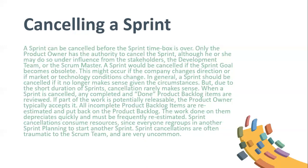Cancelling a sprint: a sprint can be cancelled before the sprint time box is over. Only the product owner has the authority to cancel the sprint, although he or she may do so under influence from the stakeholders, the development team, or the Scrum Master. A sprint would be cancelled if the sprint goal becomes obsolete — this might occur if the company changes direction or if market or technology conditions change. In general, a sprint should be cancelled if it no longer makes sense given the circumstances.